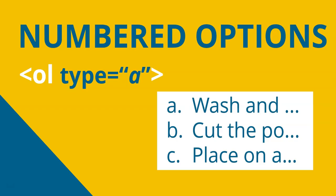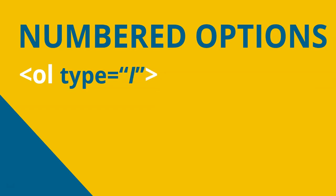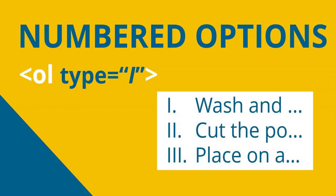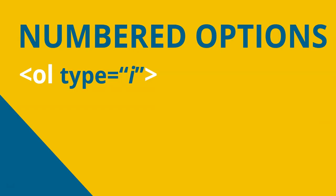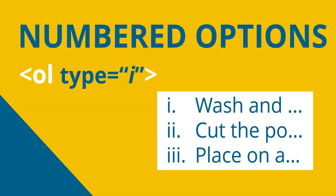Another option: you could say type equals R. That's not going to start at R and go alphabetically — R represents Roman numerals. So it will go I, II, III, IV, and so on. That will be a Roman numeral numbered list. And just like with the letters, if you use a small r, you would have the Roman numerals but in small letters. So that's the basic format of our numbered lists.